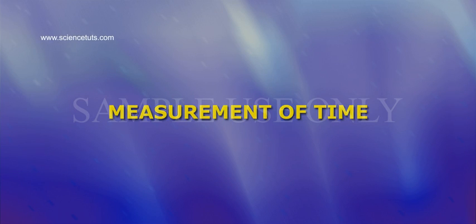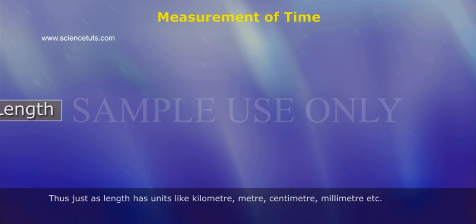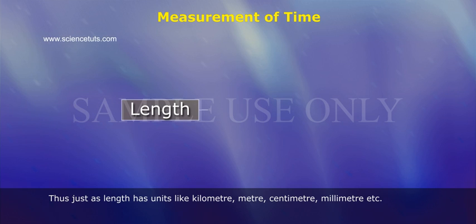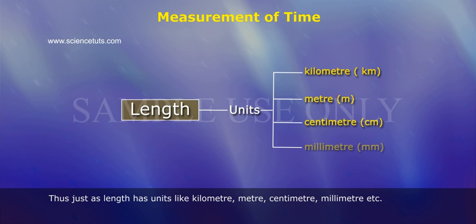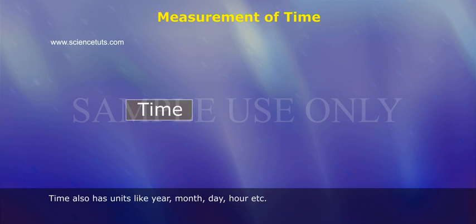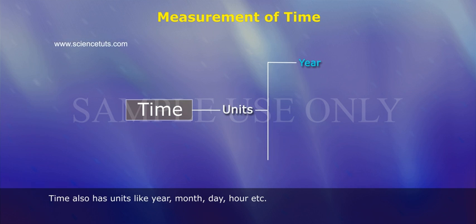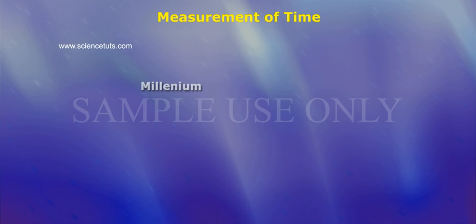Measurement of Time. Just as length has units like kilometer, meter, centimeter, millimeter, etc., time also has units like year, month, day, hour, etc. Units measuring more time include a thousand years.